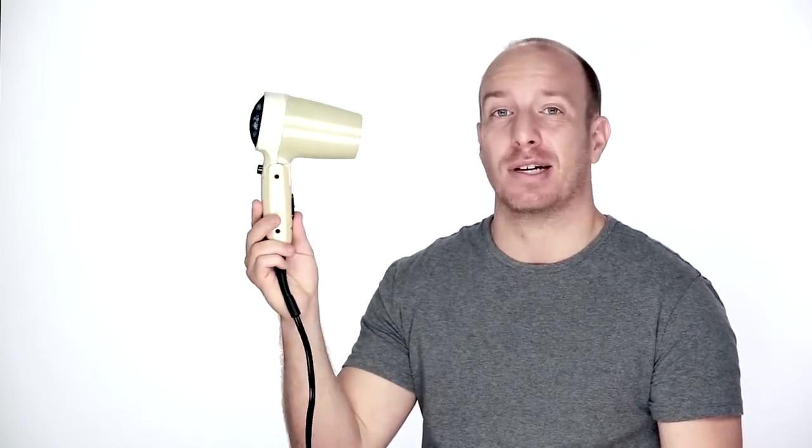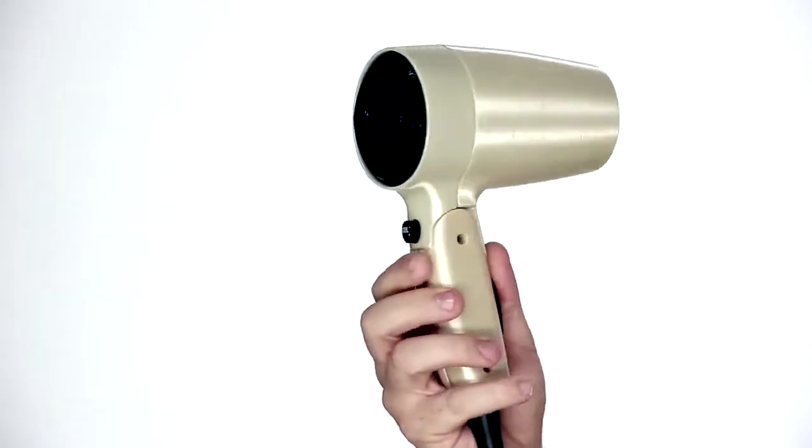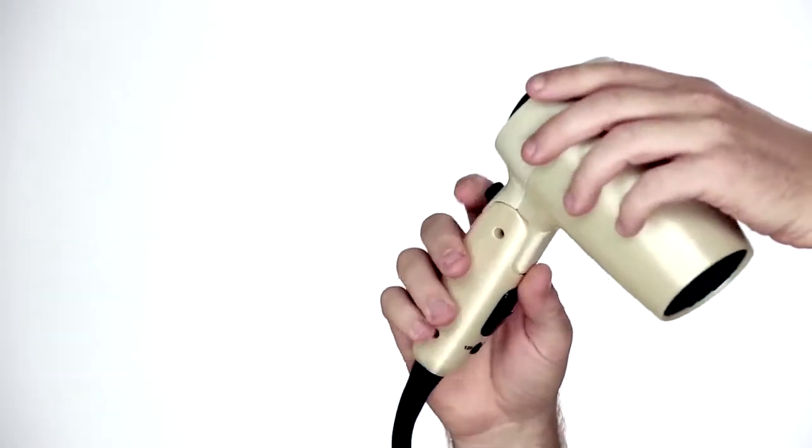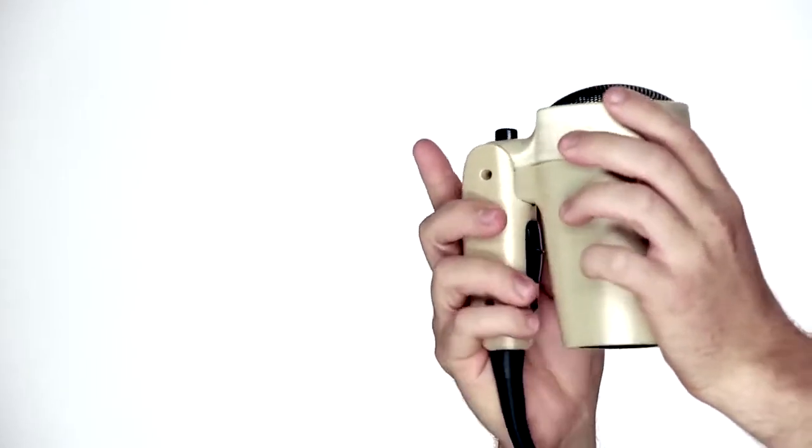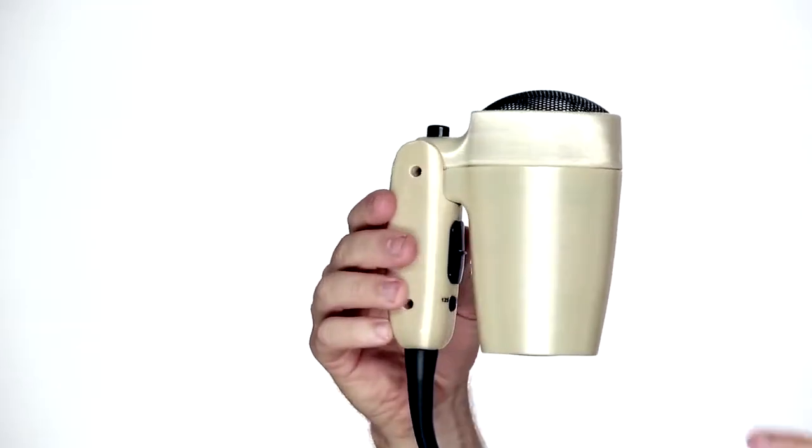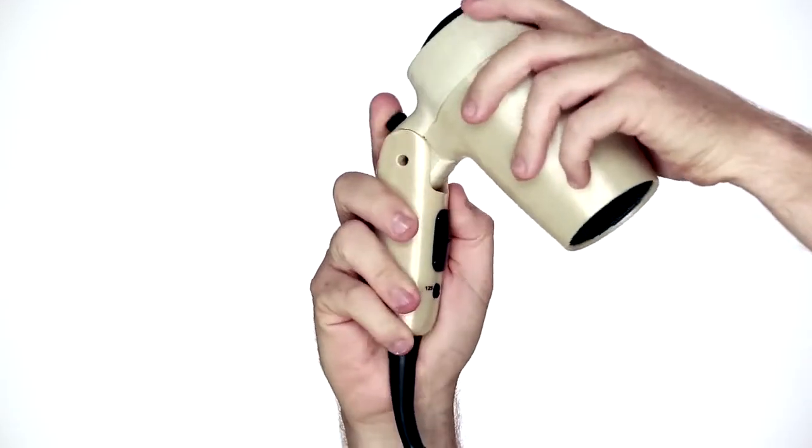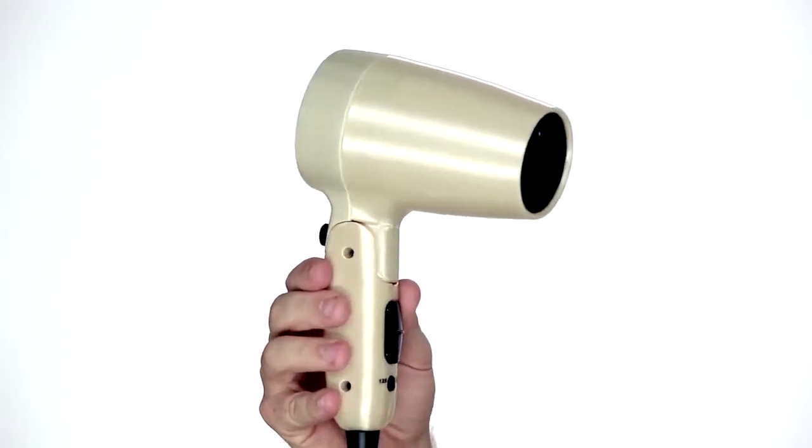An excellent example of the Ultem 9085 material in action is this functional hair dryer. This hair dryer has been assembled using the Ultem 9085 material and inside you can see all of the actual real parts, the electric cables and the screws that have enabled this part to be assembled and it enables it to snap fit together and move. And thanks to the high heat and chemical resistance of the material, this hair dryer can actually be used functionally.